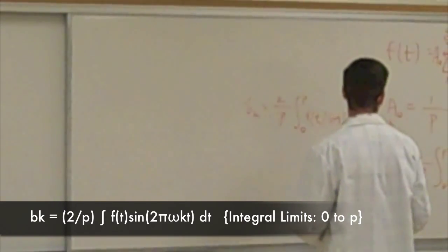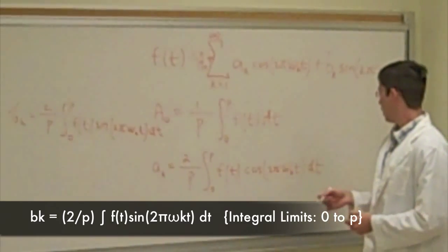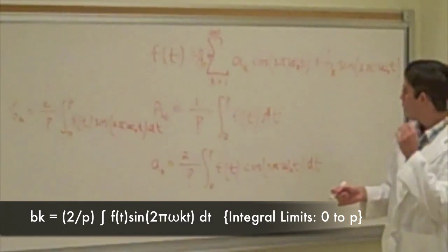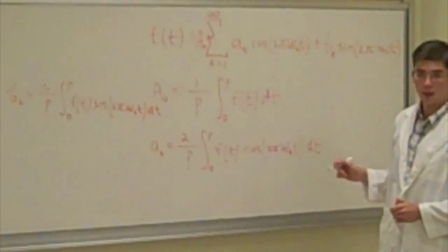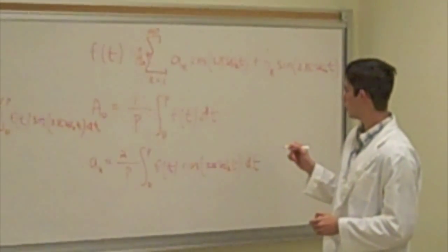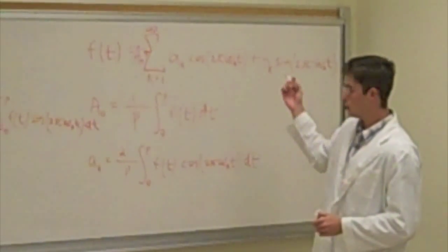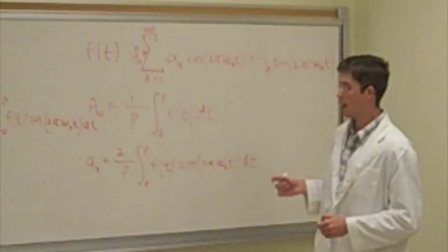So it's the exact same thing as a sub k, but with a sine term instead of a cosine term. The last thing that we don't know yet in our equation for the trigonometric Fourier series representation of a function is what is exactly omega sub k t.